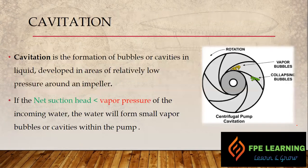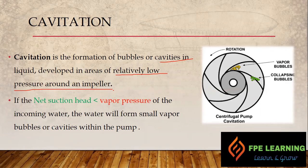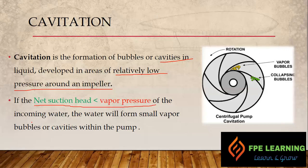Cavitation is the formation of bubbles or cavities in a liquid, developed in areas of relatively low pressure around an impeller. When liquid enters around the impellers, there are low pressure areas. Those bubbles move into the high pressure region, collapse, and can destroy the fire pump performance and the impeller. If the net suction head is less than the vapor pressure of the incoming water, the water will form small vapor bubbles or cavities within the pump.